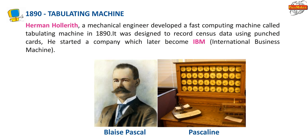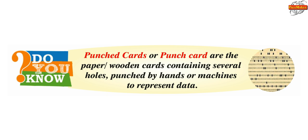1890 — Tabulating Machine: Herman Hollerith, a mechanical engineer, developed a fast computing machine called the Tabulating Machine in 1890. It was designed to record census data using punched cards. He started a company which later became IBM, International Business Machine. Do you know? Punched cards are paper or wooden cards containing several holes, punched by hands or machines to represent data.